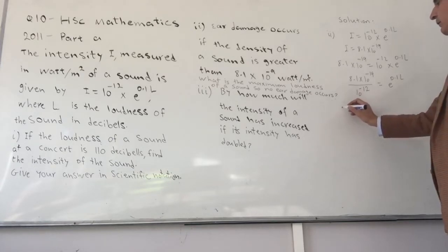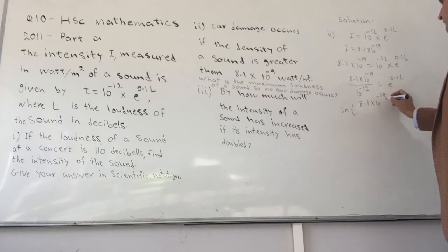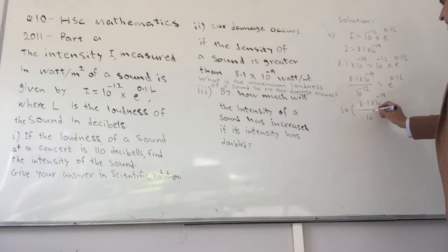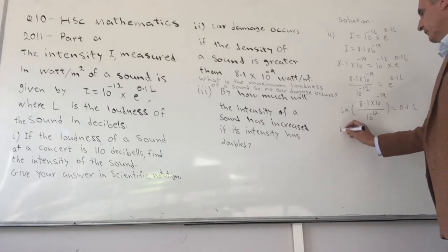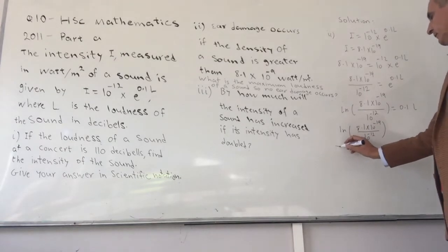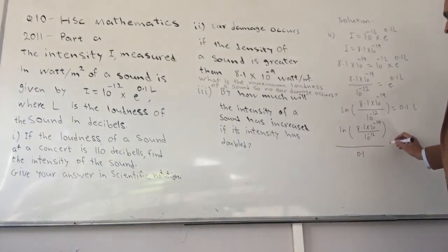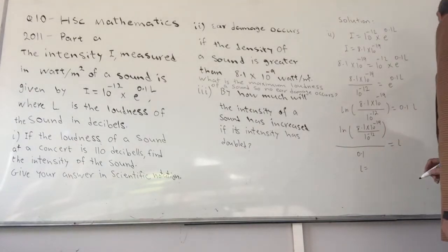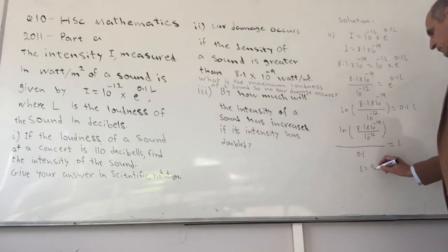Then taking ln from both sides gives us ln of this fraction equals ln of this, which is just 0.1L. Dividing both sides by 0.1 gives us ln of 8.1 times 10 to the minus 9 over 10 to the minus 12, divided by 0.1, equals L. If you type that in your calculator, you will get L equals 119.